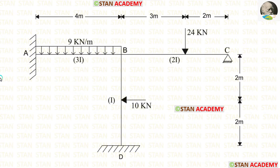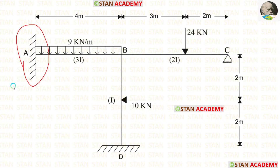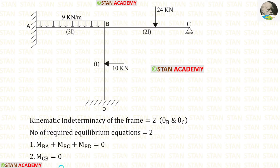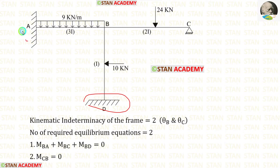This frame is a non-sway type frame because the fixed support at point A will not allow any horizontal displacement. In the slope deflection method, we have to find the kinematic indeterminacy. For that, we check the supports and joints. In this frame, there are two fixed supports — at point D and point A.